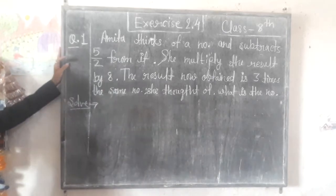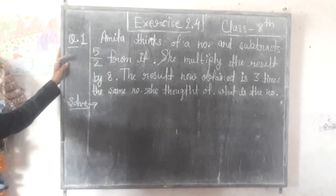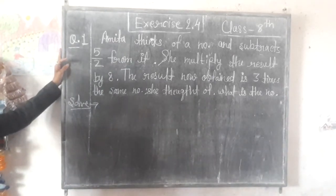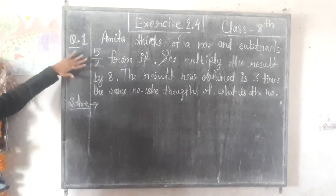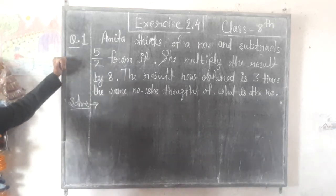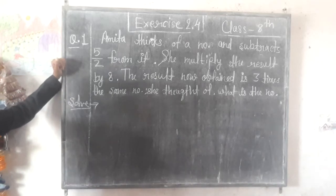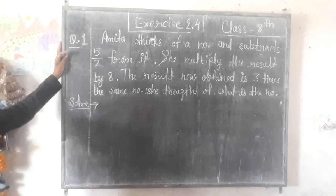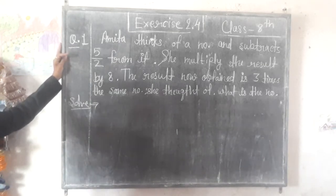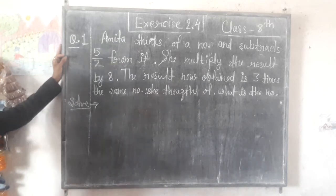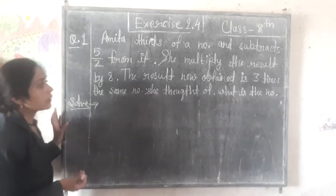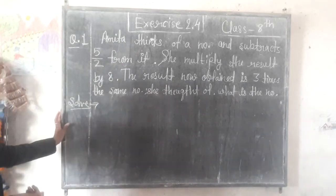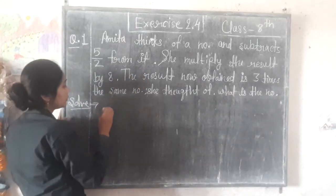Amita thinks of a number and subtracts 5 by 2 from it. She then multiplies the result by 8. The number now obtained is 3 times the same number she thought of. What is the number?